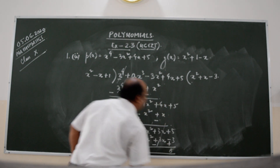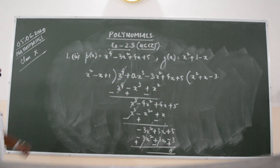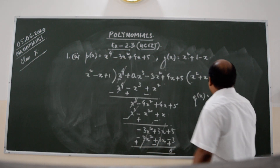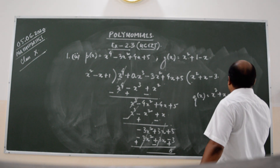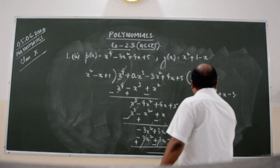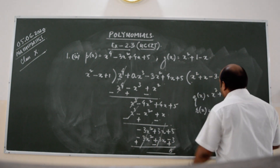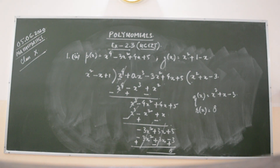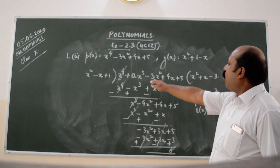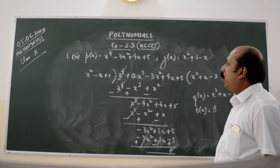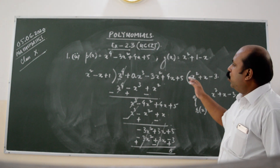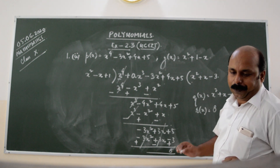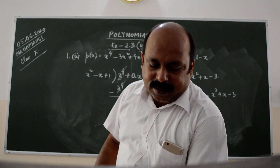So after this division, we can write down the quotient: Q of X is equal to X squared plus X minus 3, and the remainder is 8. This is how we divide a polynomial P of X by another polynomial G of X. In the same manner, you can solve Part 1 and Part 3 on your own. Now let us see Question 2.